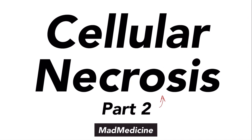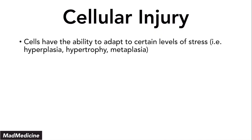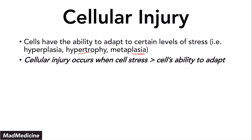We're going to start off by discussing cell injury. Your cells have the ability to adapt to a certain level of stress through various mechanisms like hyperplasia, hypertrophy, and even metaplasia. But when you have too much stress on a cell that far exceeds the cell's ability to adapt, your cell is going to get injured — that's when cell injury is happening.